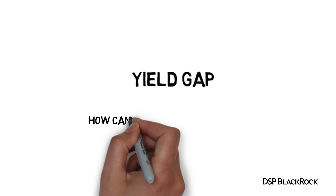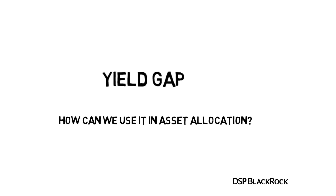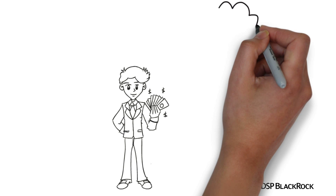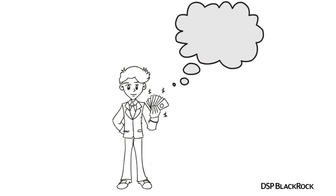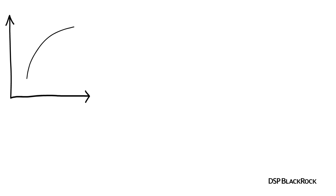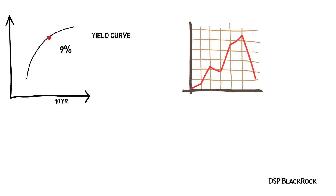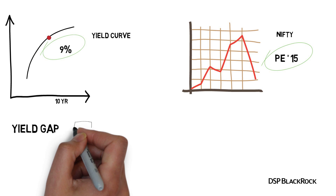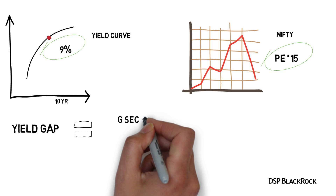Yield gap — how does it actually help in asset allocation? The question that baffles most investors who have some surplus money is: where should this money actually be? Should it be equity or debt? You can measure the yield gap to understand this. The yield gap is the ratio of the gsec yield in the debt market and the earnings yield in the equity market.